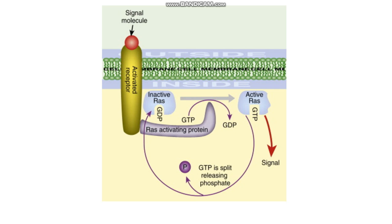In normal cells, the RAS protein cycles between the active form, which is bound to GTP (guanosine triphosphate), and the inactive form, which is bound to GDP (guanosine diphosphate). Once the growth factor binds to the growth factor receptor and it gets activated, the RAS protein gets activated. Once activated, it will induce phosphorylation of many proteins, which then activates transcription factors, which read genes to make proteins. These proteins are called cyclins and CDKs. Cyclins and CDKs together drive the cell through the cell cycle.